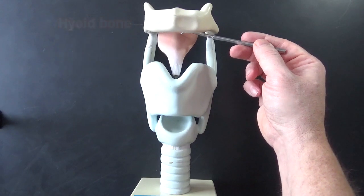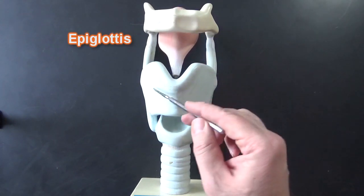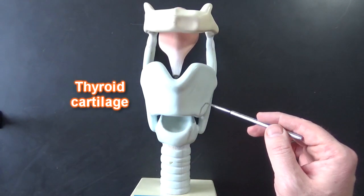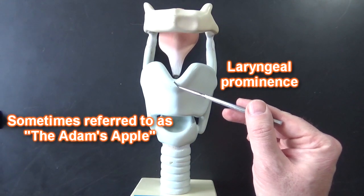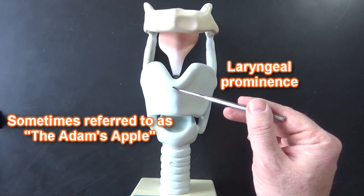This structure right here is the epiglottis. This structure right here is the thyroid cartilage and this is the laryngeal prominence right here. More prominent in males than it is females.